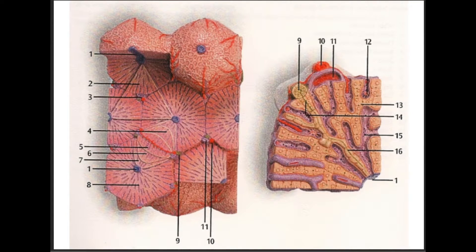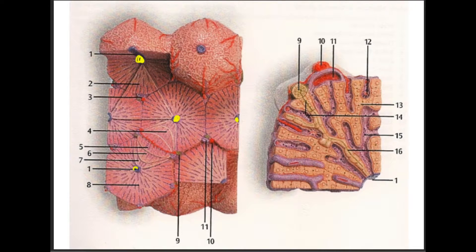What we're looking at here is the micro anatomy of the liver. Starting with number one, we have the central vein. At each of these liver lobules, right in the center, we have the central vein.